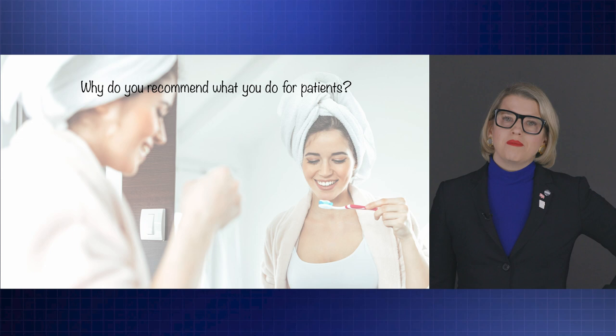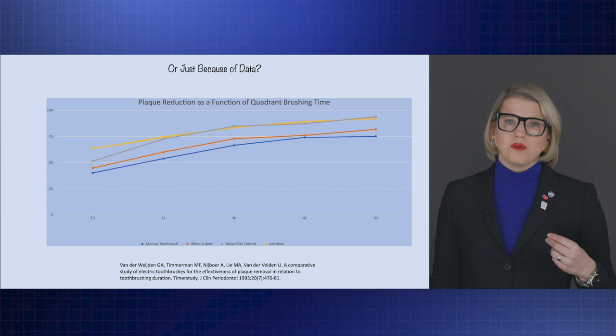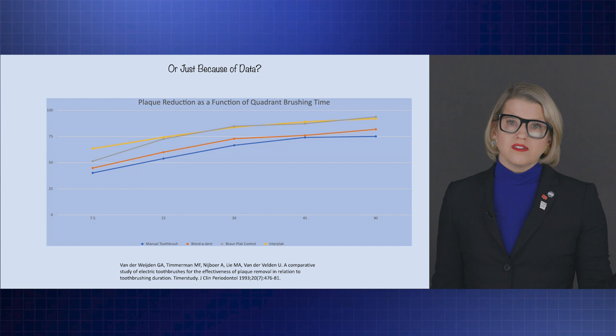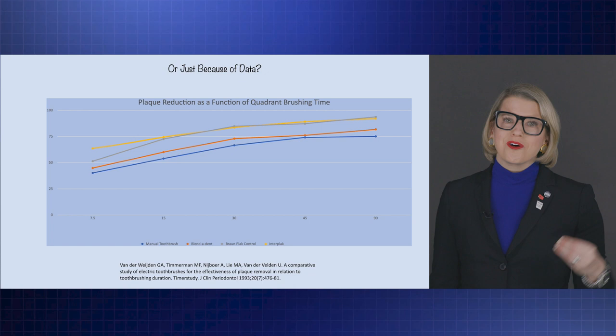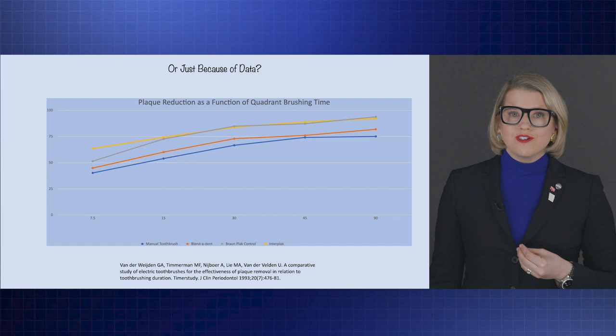Why do you recommend what you recommend for patients — just because, or is it because of data? When we think about why we picked the two-minute mark, it's really because the van der Weijden study looked at quadrant brushing over time and saw a diminishing return after 30 seconds. Does that mean it's right for every patient? Absolutely not. There are patients who need more or less based upon their disease risk profiles and their particular anatomy.